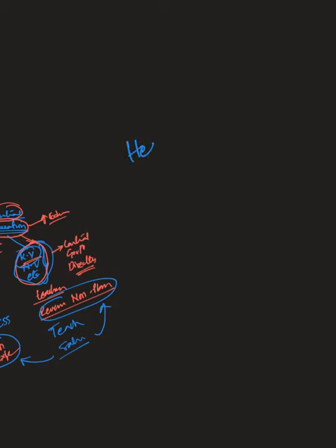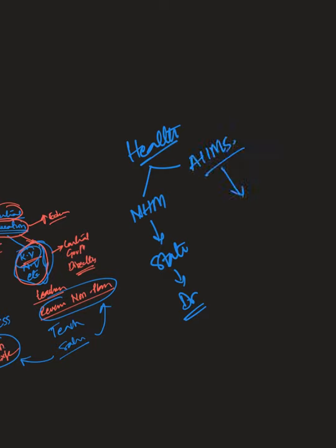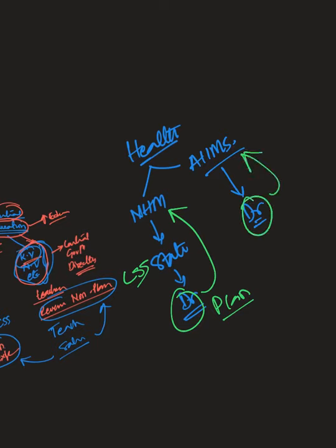Similarly with health: salaries of doctors under the National Health Mission came under planned expenditure because they were spent through a centrally sponsored scheme, whereas doctors' salaries at AIIMS came under non-planned revenue expenditure. The same kind of resource — doctor salaries — was unscientifically divided into different headings with no real meaning. The government was spending the same kind of money under different categories.